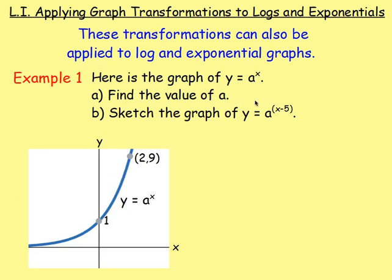Let's move on then to looking at some of the transformations with log graphs. Example one: here is the graph of y equals a to the power of x. First of all, find the value of a. And secondly, sketch the graph of y equals a to the power of x minus 5. Looking at the graph, we can see it passes through the point (0, 1) and also through the point (2, 9). The graph is in the form y equals some number to the power of x.